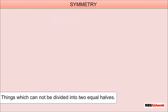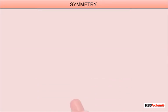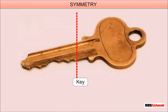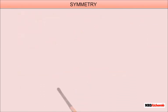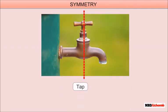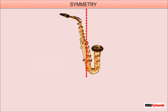Things which cannot be divided into two equal halves include: tree, table lamp, banana, key, hockey stick, axe, tap, boomerang, and saxophone.